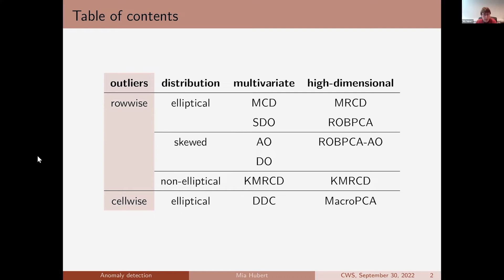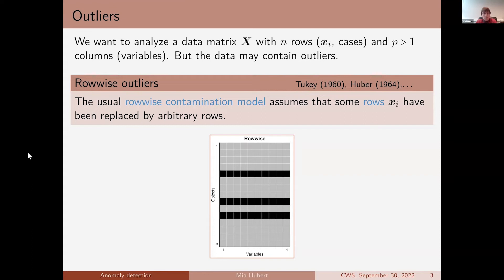Let's first focus on the difference between row-wise and cell-wise outliers. When we talk about outliers, we typically say observation 5 or 10 from my dataset is an outlier. If this is your data matrix, you essentially indicate some of the rows to be contaminated. The row-wise contamination model assumes that some rows have been replaced by arbitrary rows, and you try to find and flag them. The result of a row-wise robust method is typically robust estimates for your model coefficients or parameters, and also that you flag a whole observation as an outlying point or not.